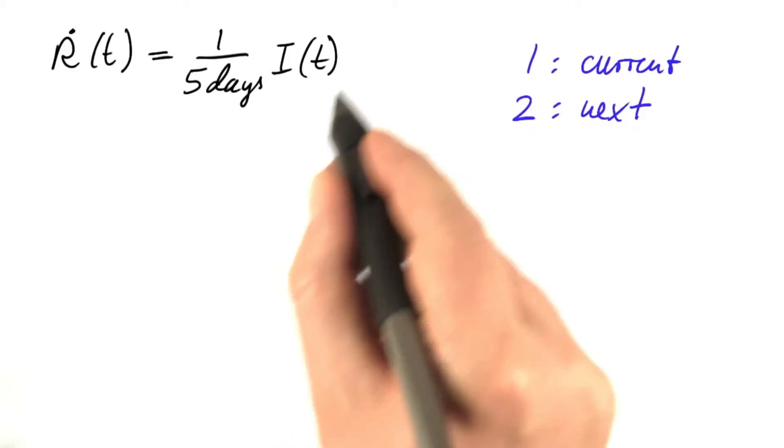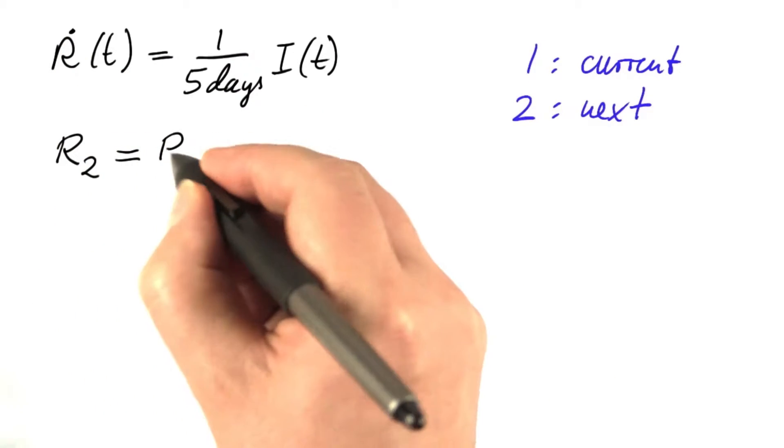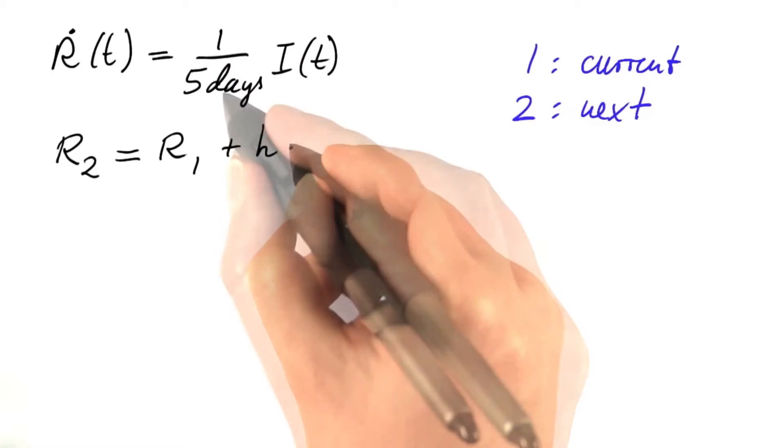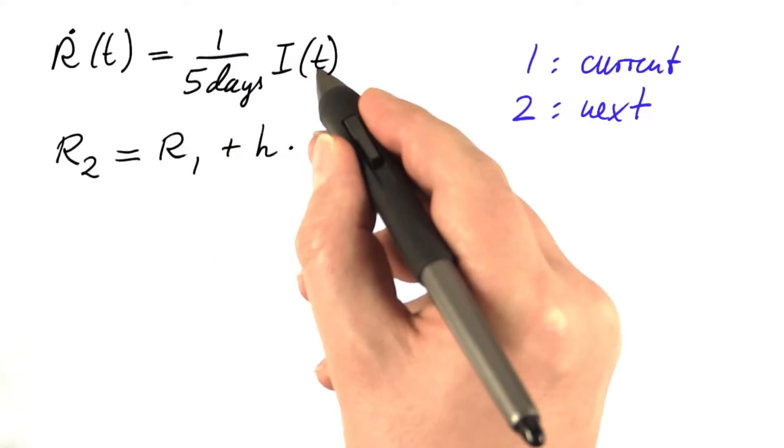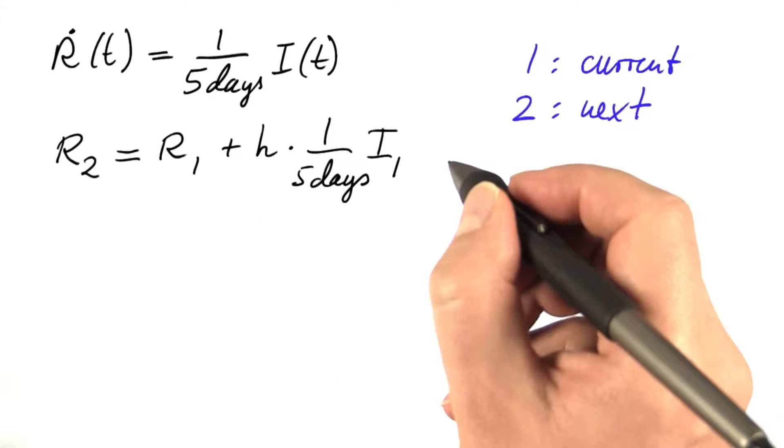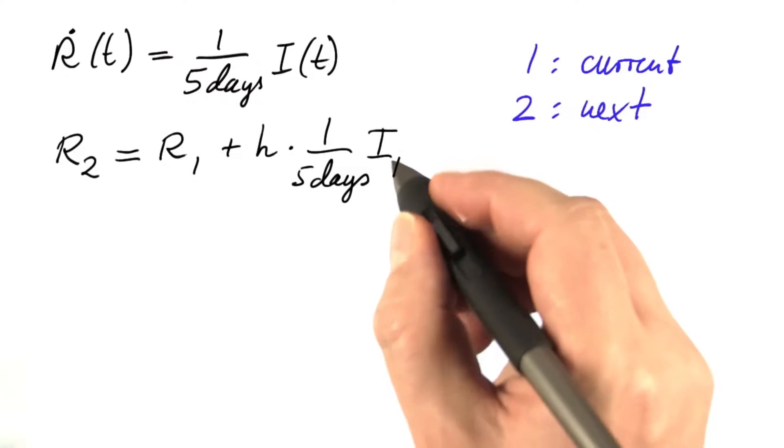The forward Euler method would turn this into the following. The value of r, one step later, is the current value of r plus step size times the current rate of change, which is 1 over 5 days times the current value of i, i1 in my new notation. This would be the forward Euler method.